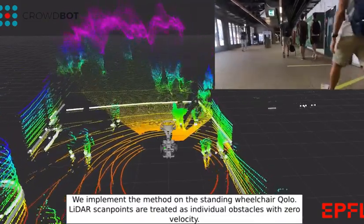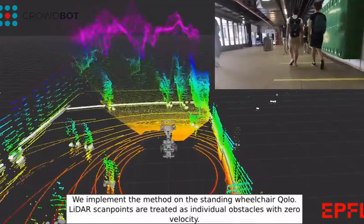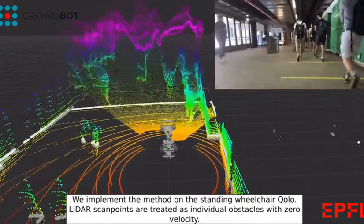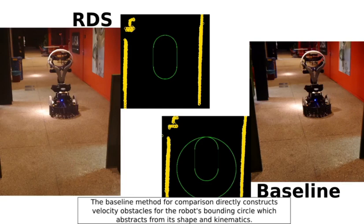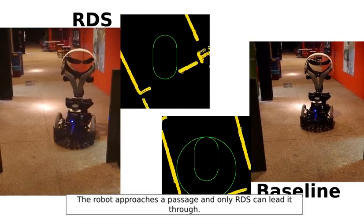We implement the method on the standing wheelchair colo. LiDAR scan points are treated as individual obstacles with zero velocity. The baseline method for comparison directly constructs velocity obstacles for the robot's bounding circle, which abstracts from its shape and kinematics. The robot approaches a passage and only RDS can lead through it.